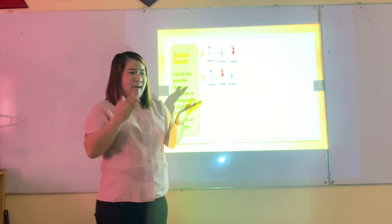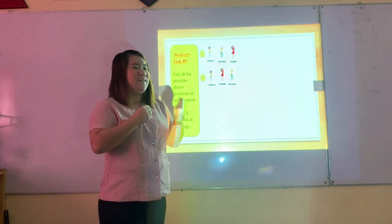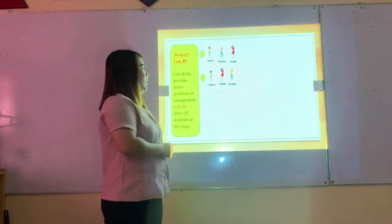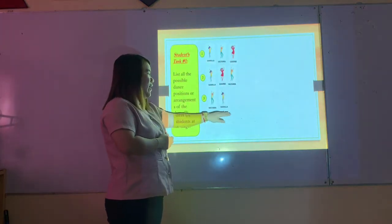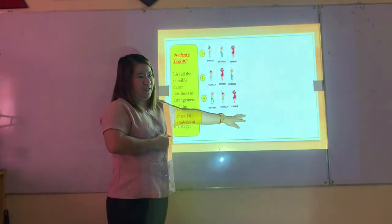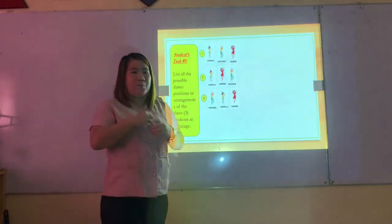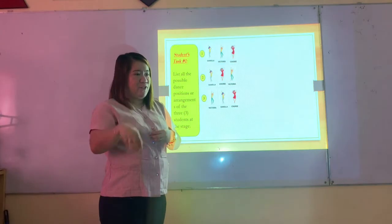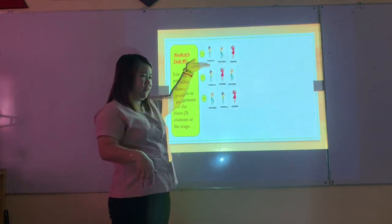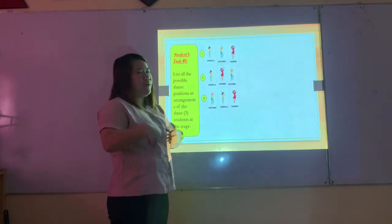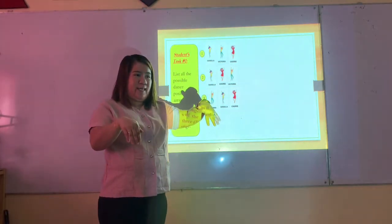Another arrangement: Victoria now occupies the first position, Daniela the second, and Charlie the third. Last time we had Daniela first; now we have Victoria, Daniela, and Charlie.